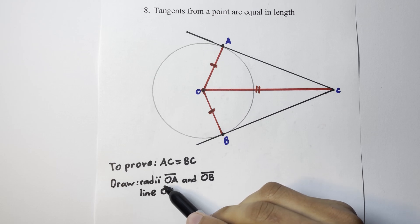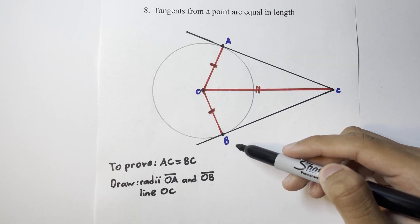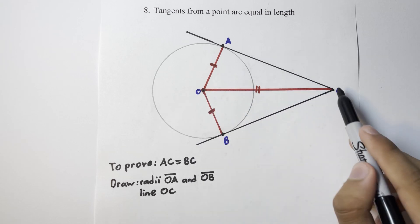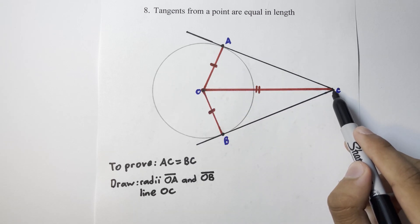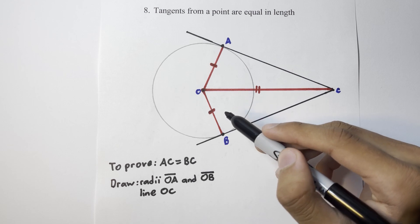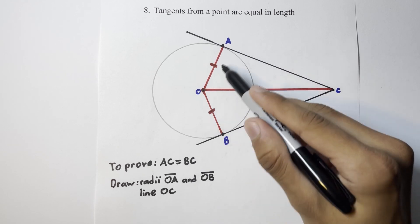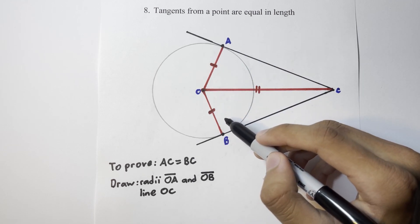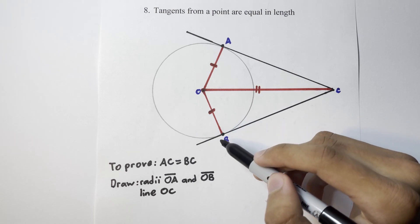Firstly, the radii OA and OB, and the line OC joining the origin of the circle to our external point outside the circle. Remember that all the radii of a circle are equal, therefore OA and OB are equal in length, and this is something which will be useful for us later on in this proof.